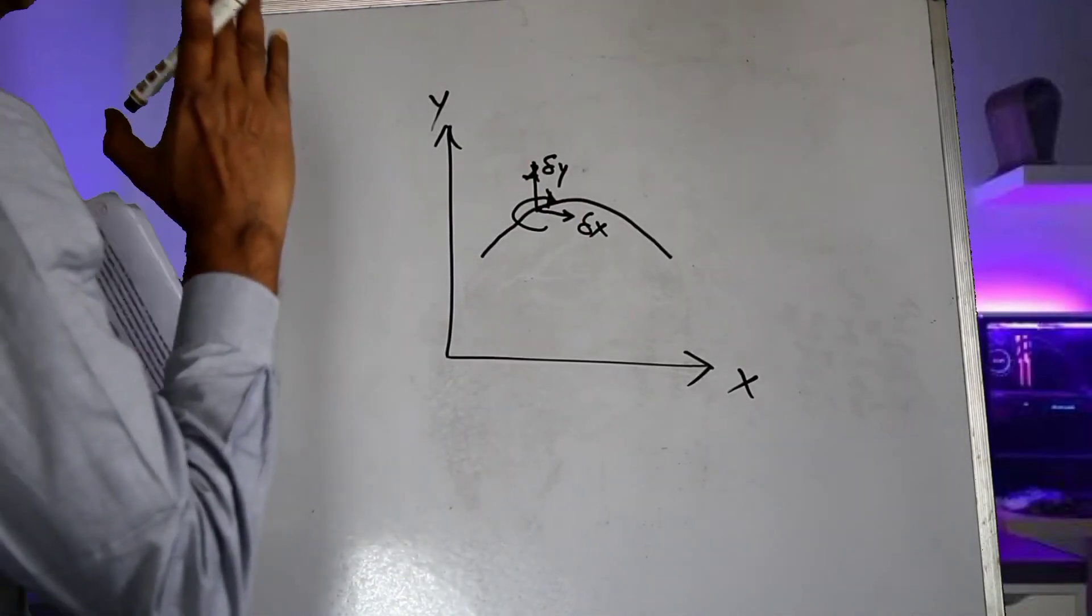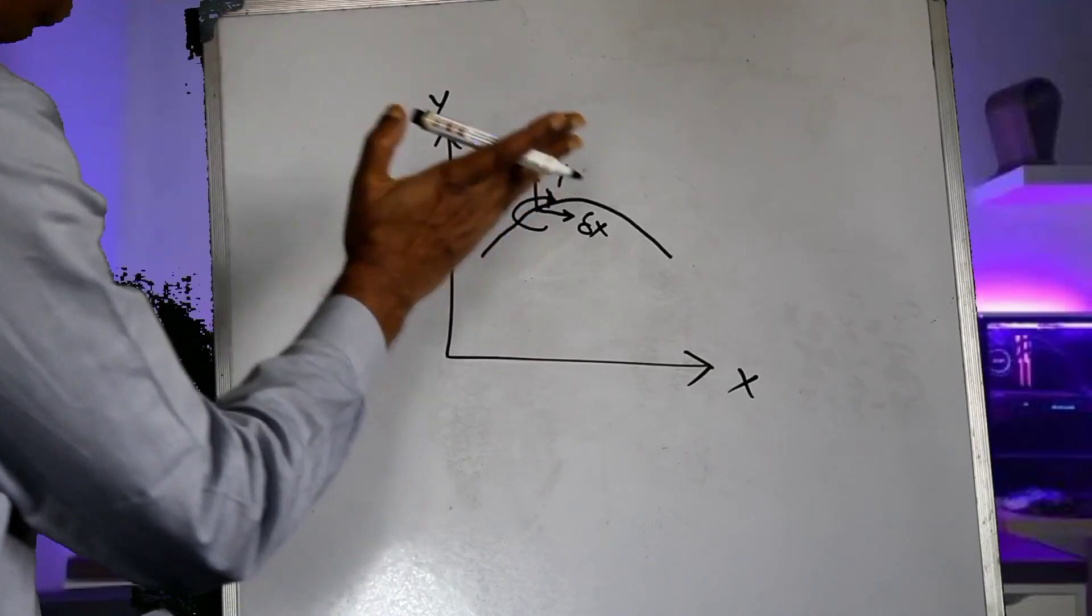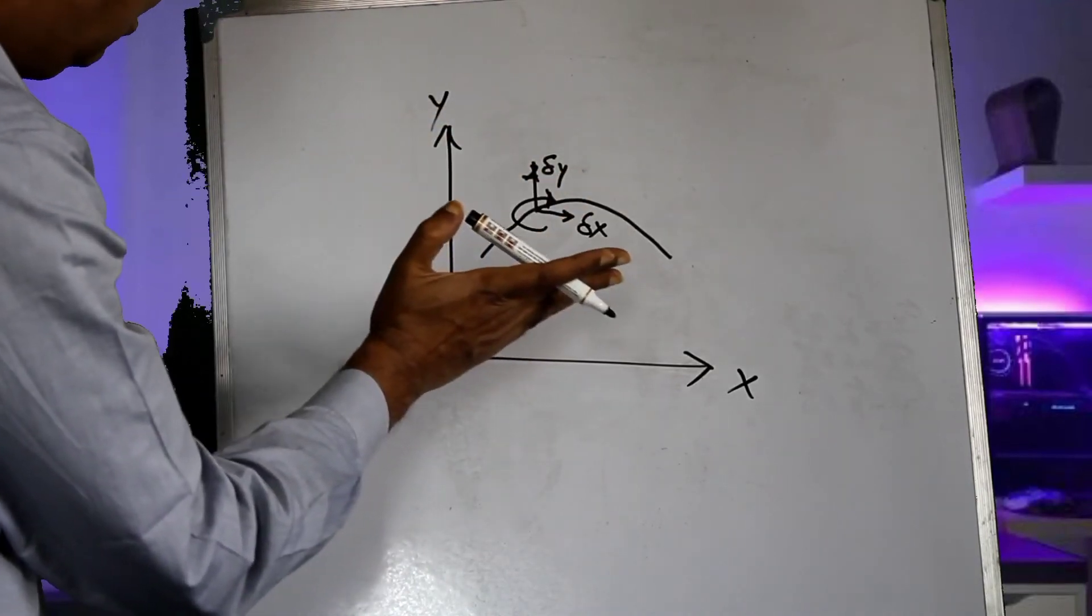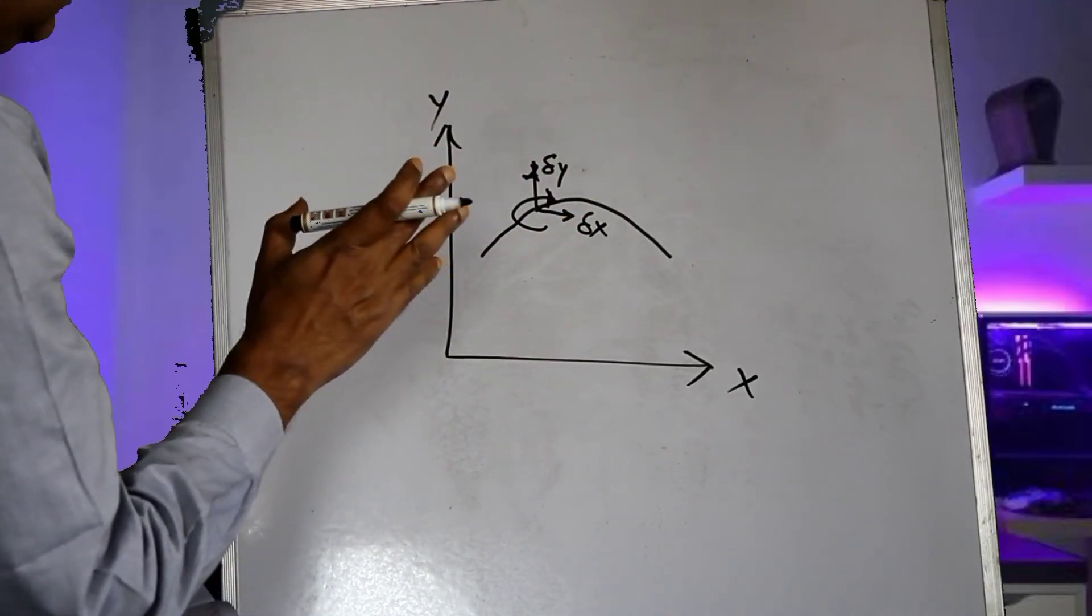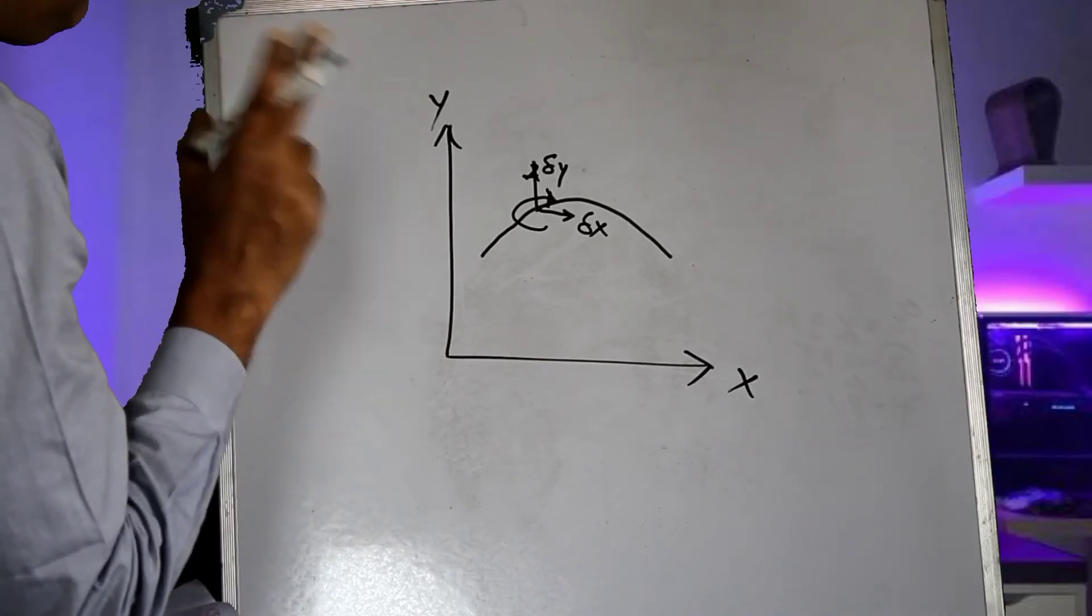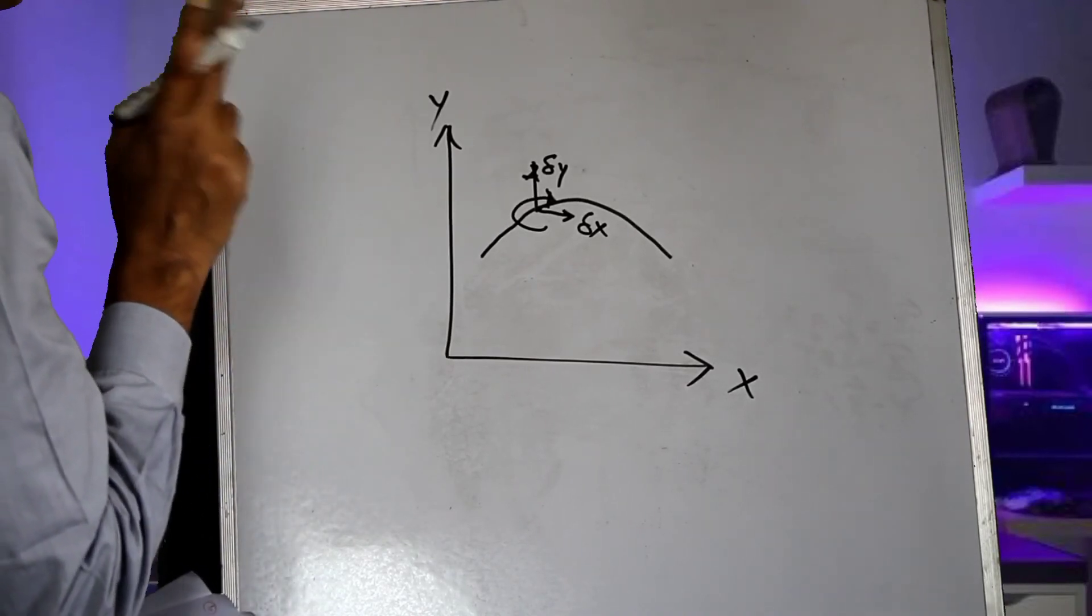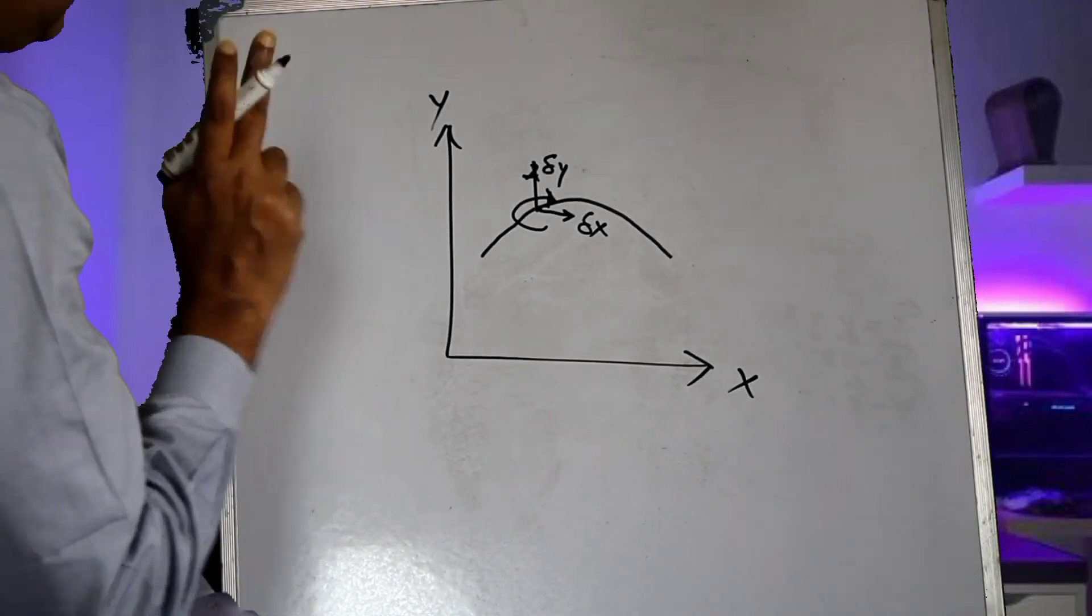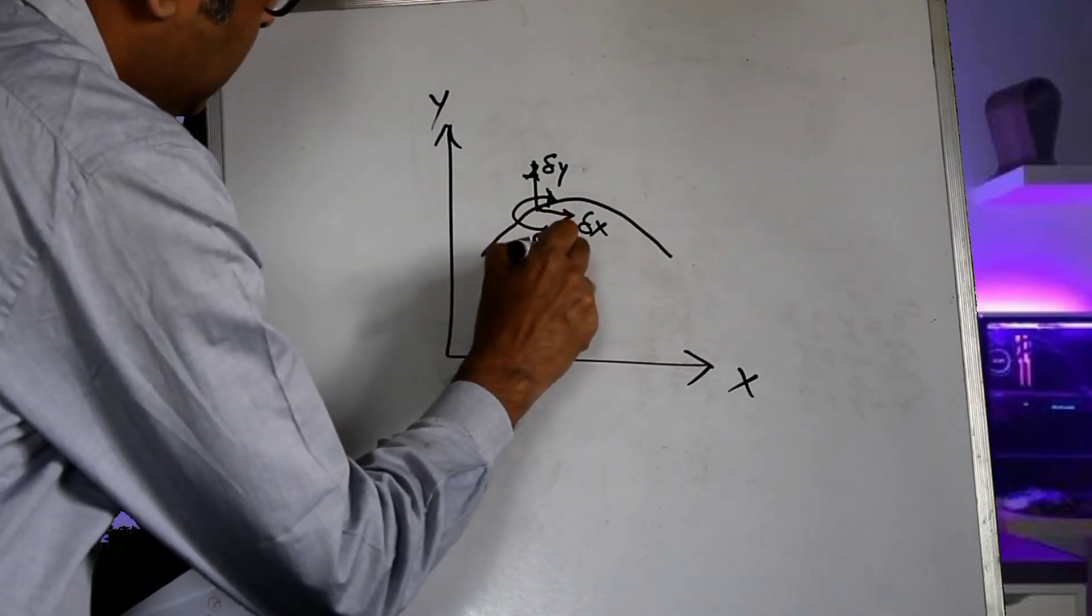So the motion of the ball would be represented by the three components of motion delta x, delta y and theta z.